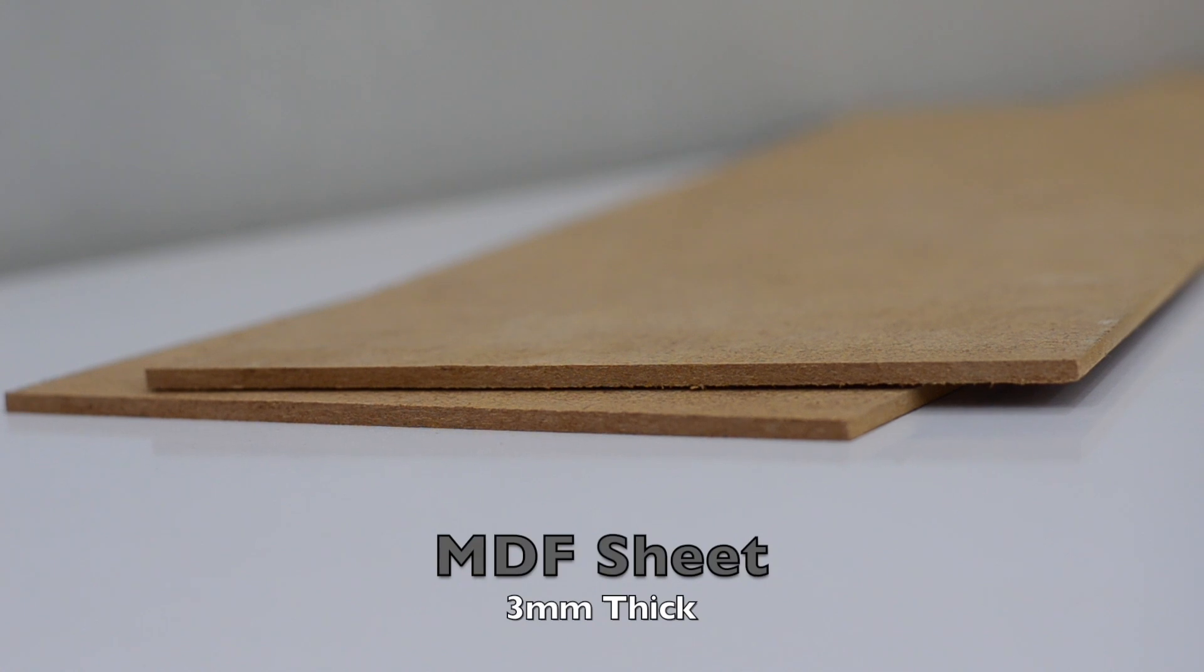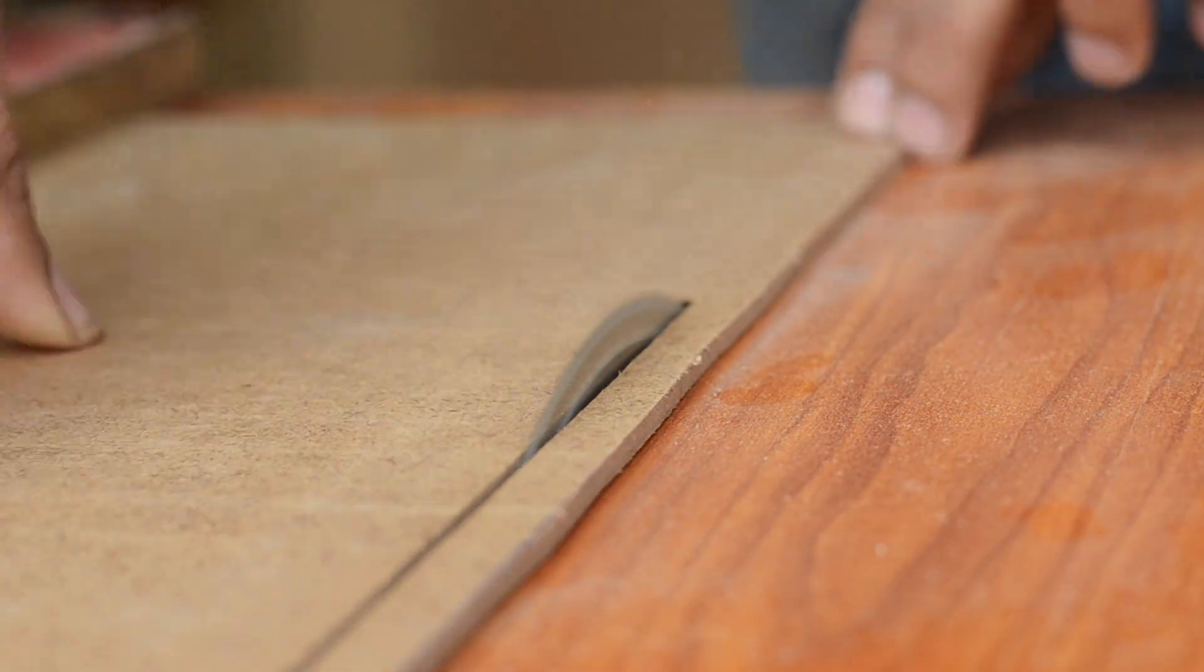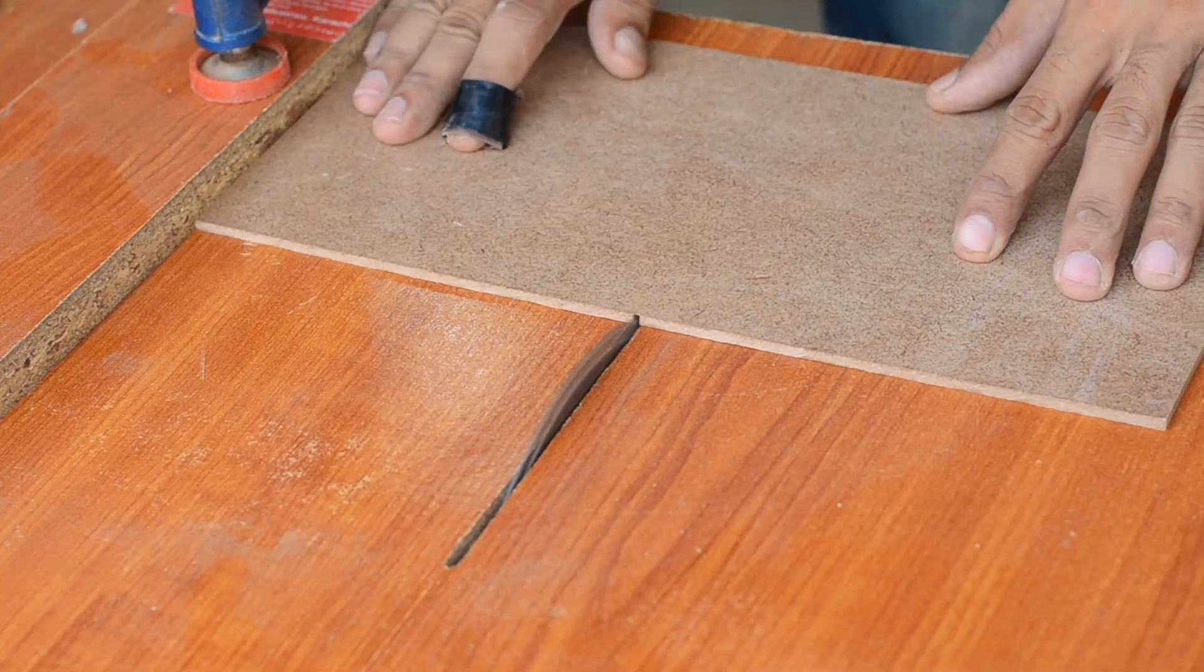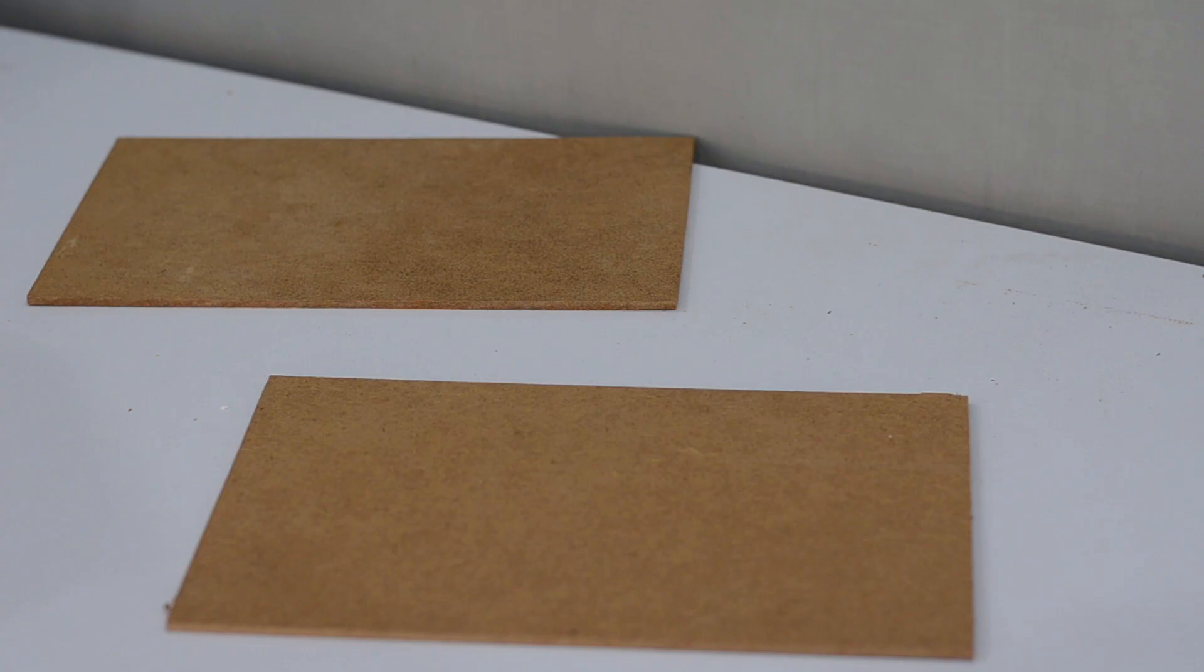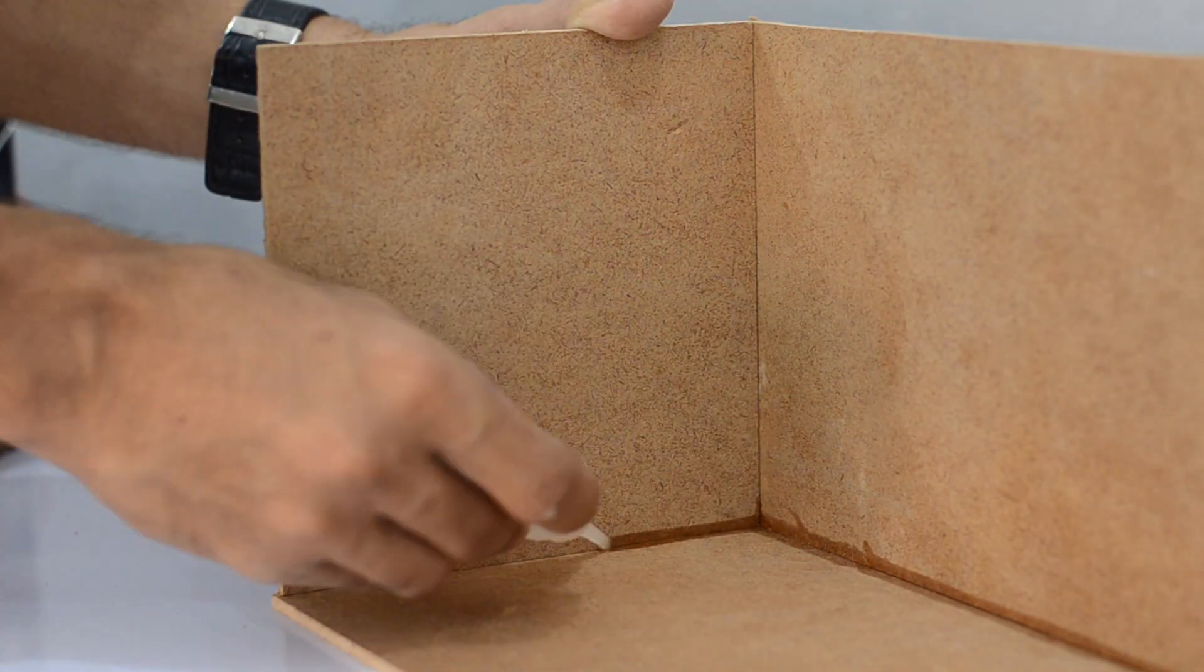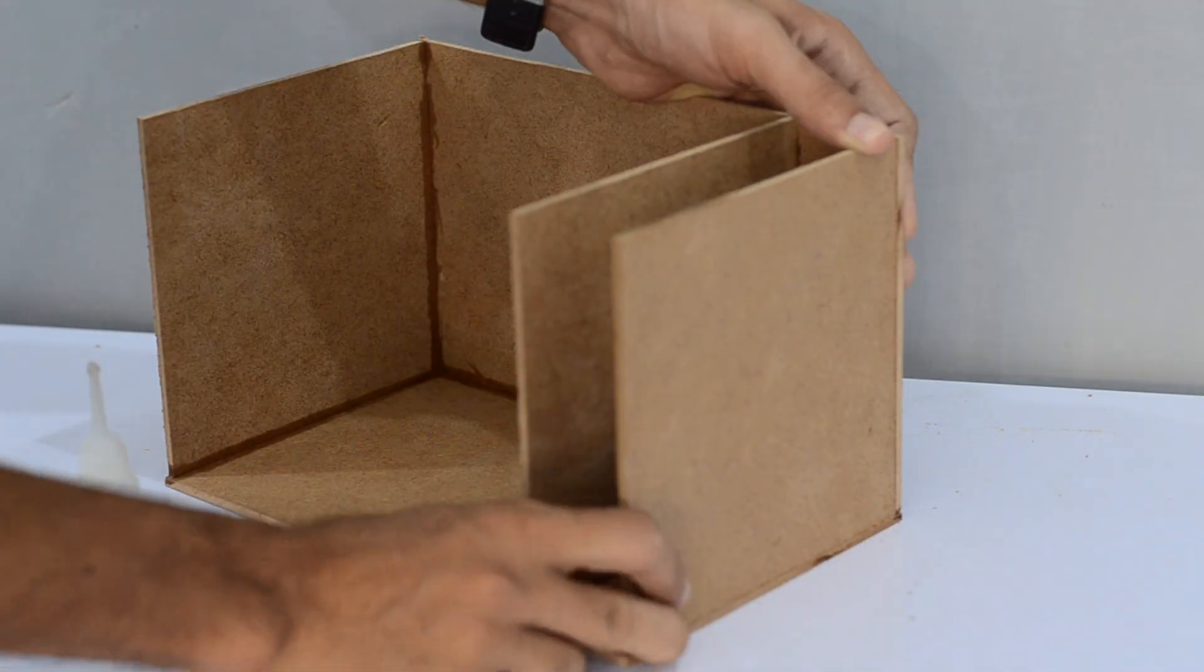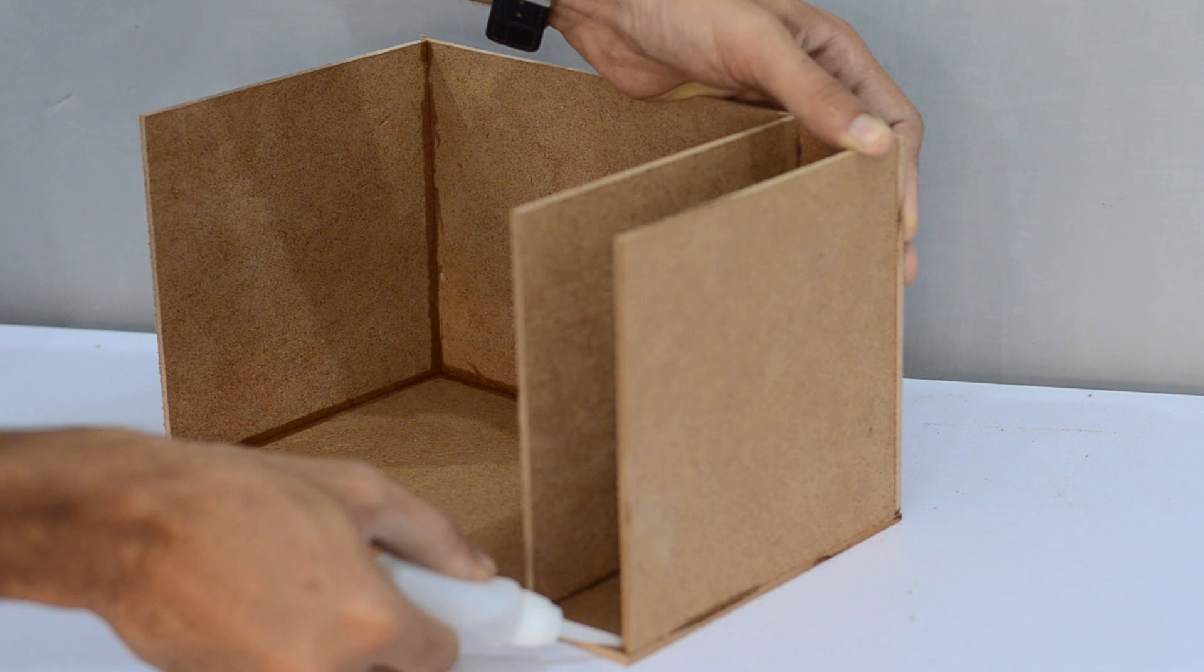The enclosure for this deep freezer is made out of 3mm thick MDF sheet. All the parts were cut down using my homemade table saw, while the dimensions for each of these parts will be available in the description below. I glued all the parts together to form the enclosure that is made up of two separate compartments, one of which is obviously the refrigeration compartment while the other one is for electronics and wiring.